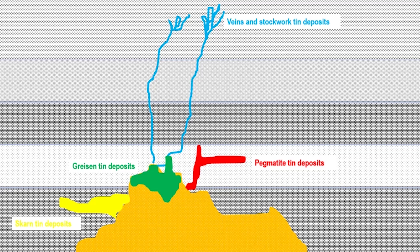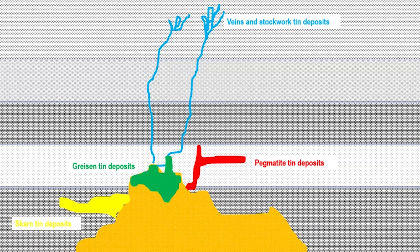Skarns, shown in yellow, are also formed during the waning stages of the cooling process, when tin-rich fluids are injected into and react with a carbonate-bearing host rock. This is a process called metasomatism and this forces the tin to precipitate.